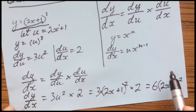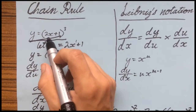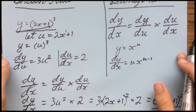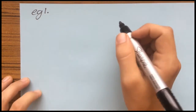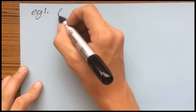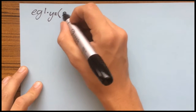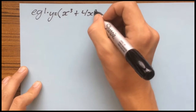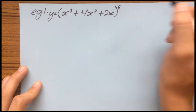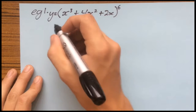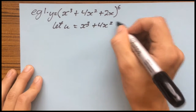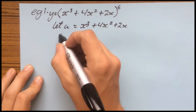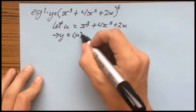Hope that sticks. Now for another example — Example 1. We'll make the inside a bit bigger. So y equals x cubed plus 4x squared plus 2x, all to the power of 6. Same process: you let u equal the inside — u equals x cubed plus 4x squared plus 2x — so now y equals u to the power of 6.